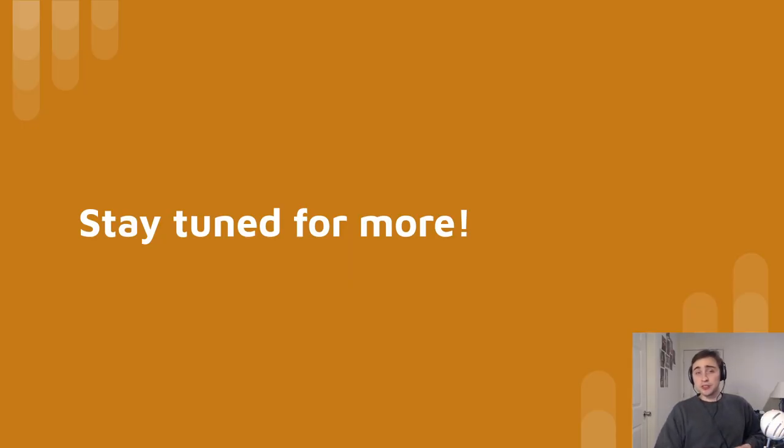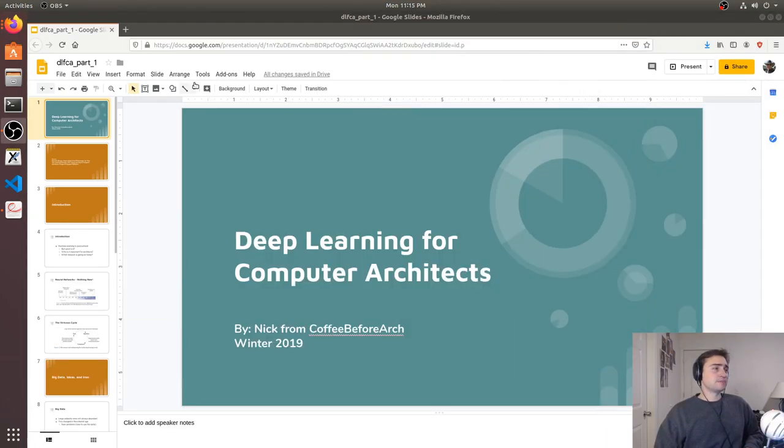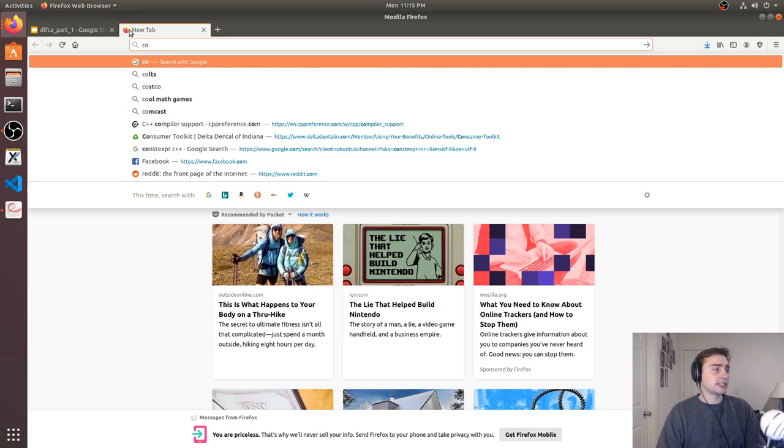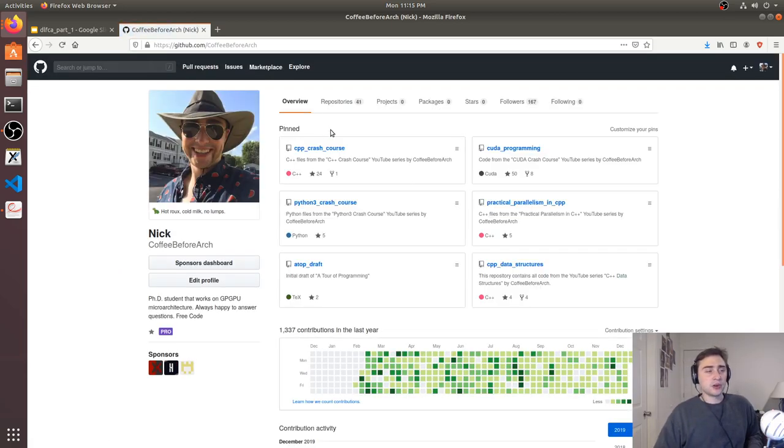So that's going to do it for this very brief introduction. We're going to have a lot more videos on this series soon, covering the fundamentals of machine learning and neural networks, and going into some of the really big ideas in computer architecture for things like deep learning. That's going to do it for this video. As always, all this stuff is going to be online. And you can check out any of my other content at github.com/coffeebeforearch. This will have all the content for all my GPU programming, CPU programming, parallel programming series as well. So stay tuned for more. As always, I'm Nick, and I hope you have a nice day.